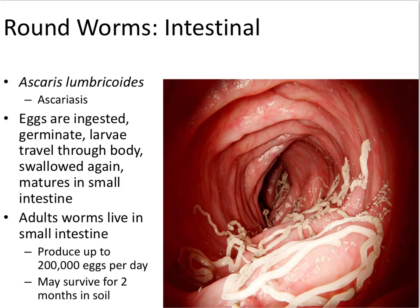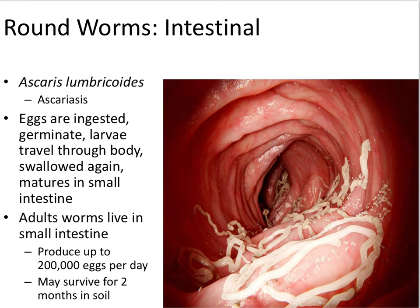The first organism we'll talk about is a roundworm that infects primarily the intestines. It is called Ascaris lumbricoides, and the disease it causes is called Ascariasis. Basically, the eggs are ingested — this is typically a fecal-oral transmission situation. The larvae travel through the body, the person ends up coughing them up and swallowing them again. The larvae then mature in the small intestine, and the adult worms live there. This worm produces up to 200,000 eggs per day, and those eggs can survive for up to two months in the soil.